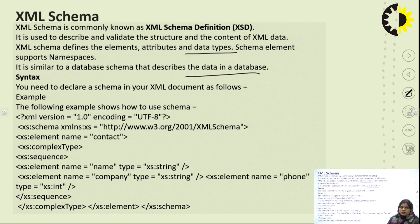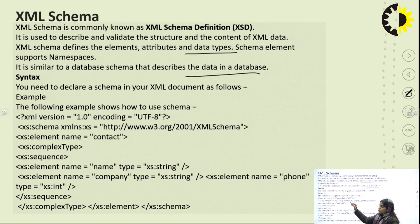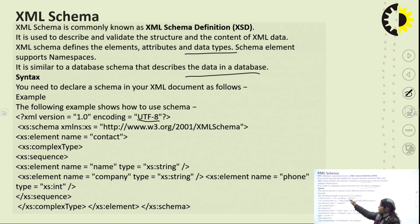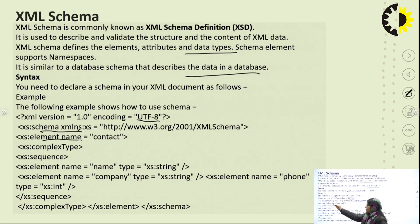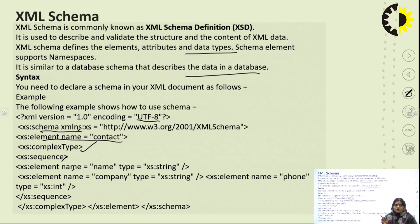You need to declare schema in your XML document. In the code, first declare the XML version and encoding — UTF-8 or UTF-16, with UTF-8 used by default. Then write the XML namespace: xmlns, followed by the element name such as 'contact', along with complexType, sequence, and name — these are the syntaxes used in XML schemas.